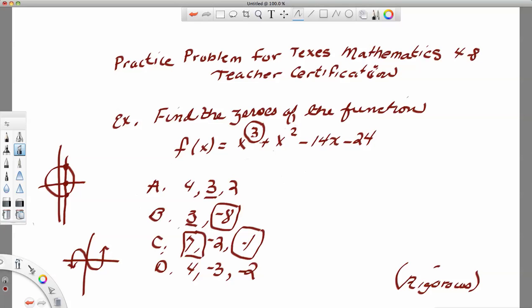Now the way standardized tests are set up is they have one problem that's just completely out there wrong, and they have a problem that's very similar to the right answer so that you can begin to narrow down your answer choices. So those problems there that none of the numbers appear to be common in any of the others, I'm not even going to begin to try those. But when I look at answer choices A and D, I see that they have the same numbers, 4, 3, and 2. The only difference is that the 3 and the 2 are negative in answer choice D.